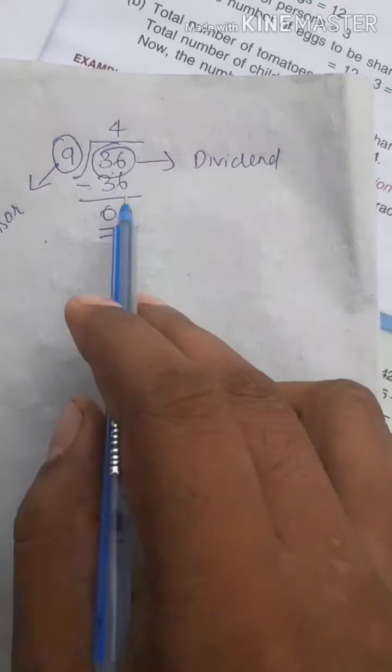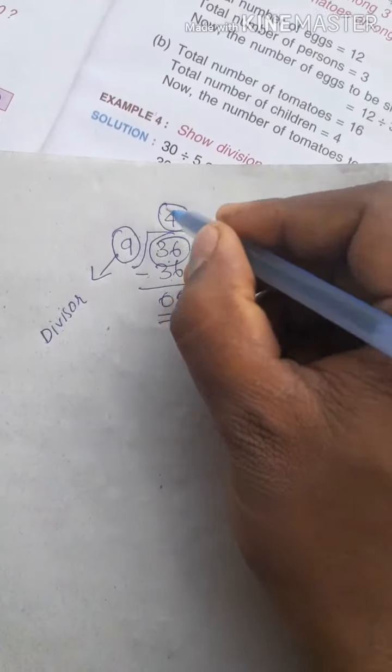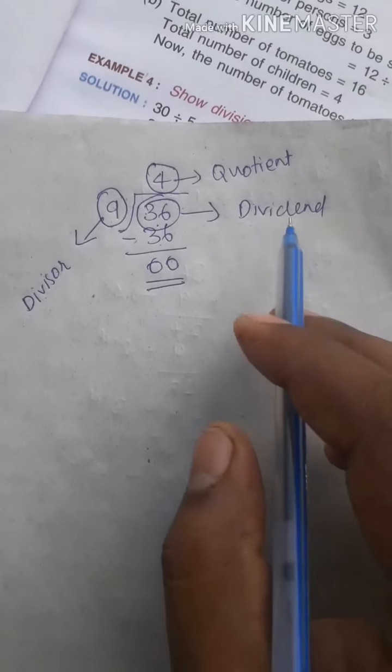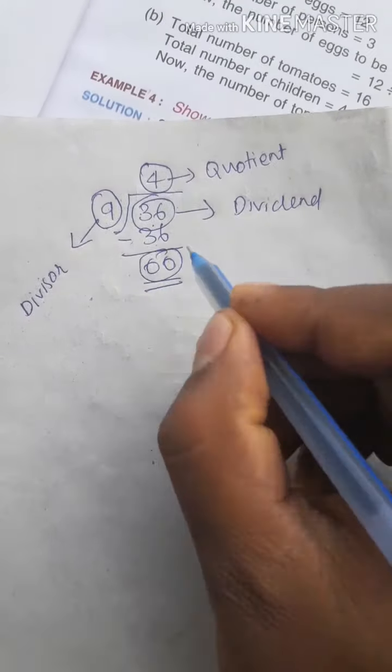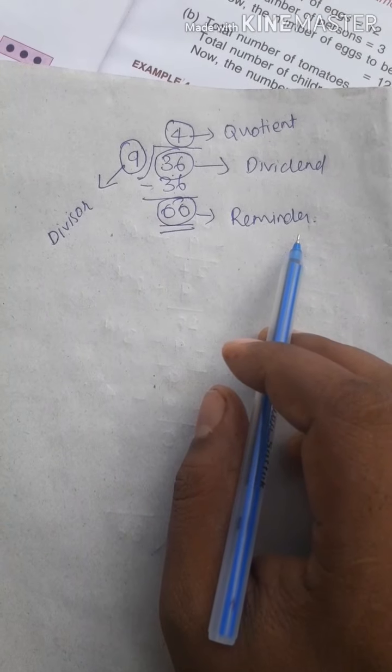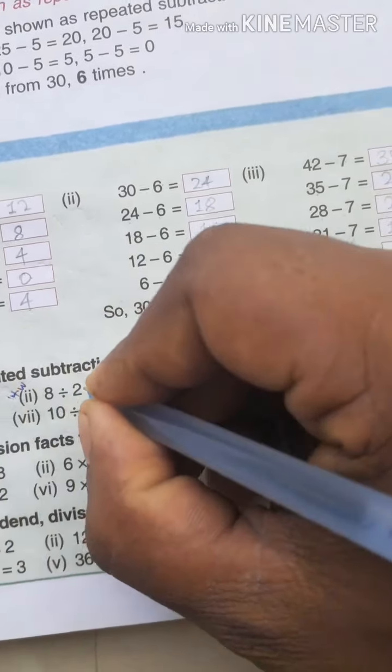In this equation, this is divisor. This 36 is dividend. And 4 is quotient. And 0 is remainder. Understood?